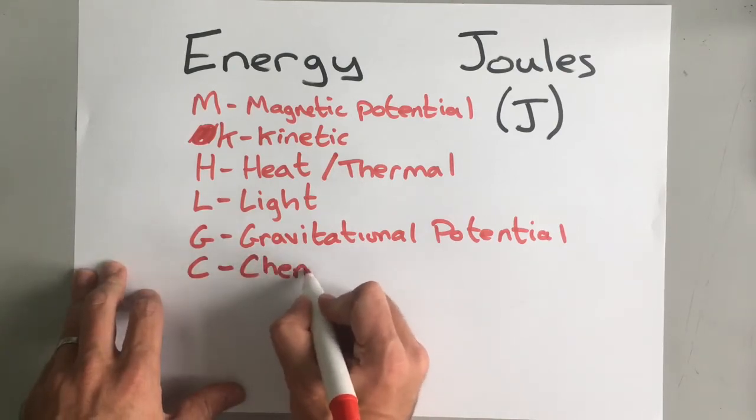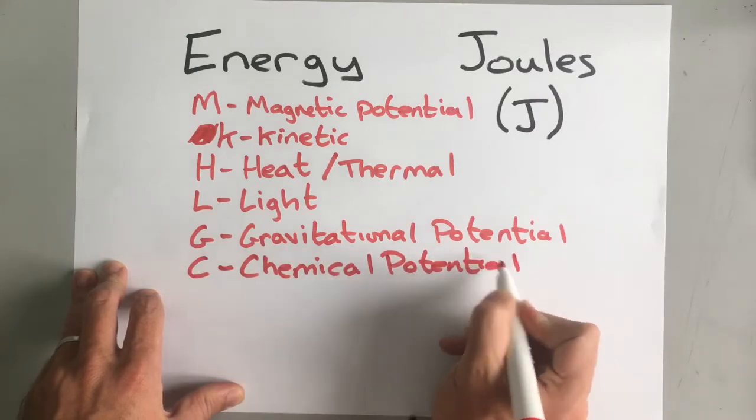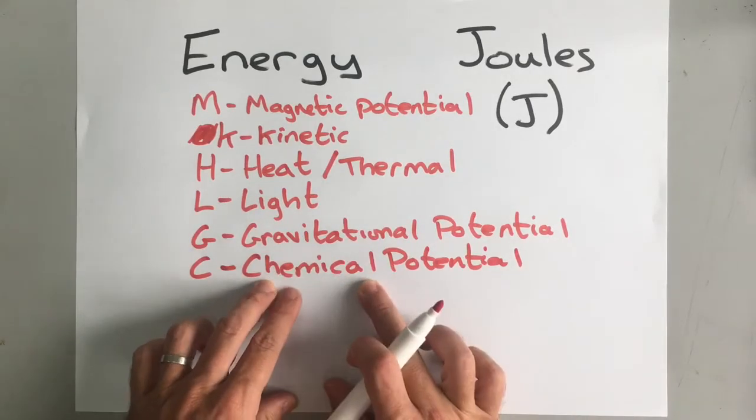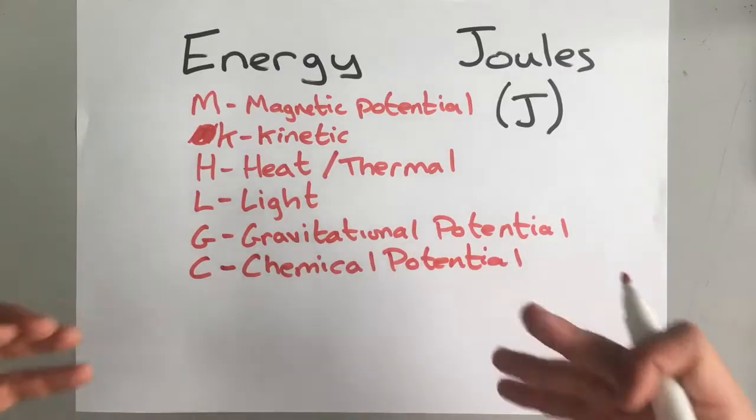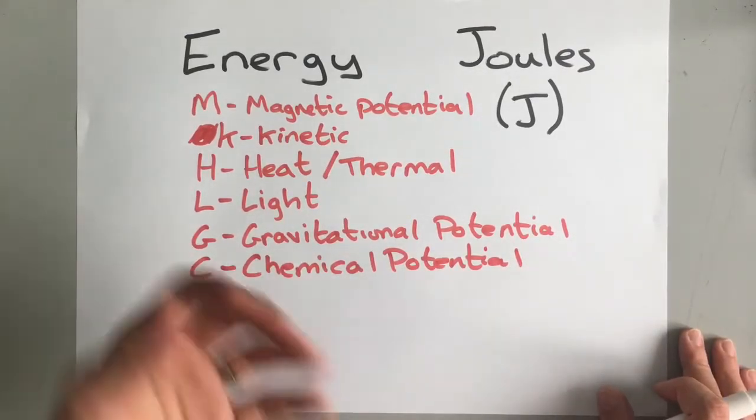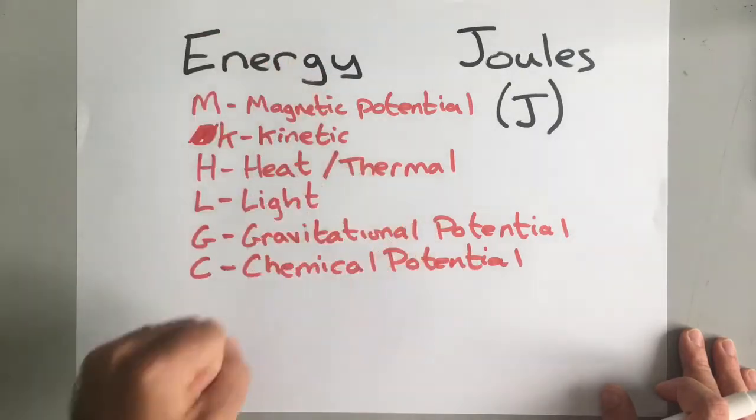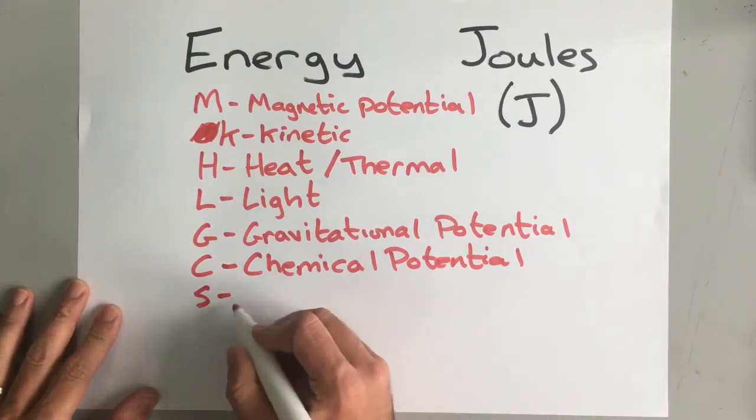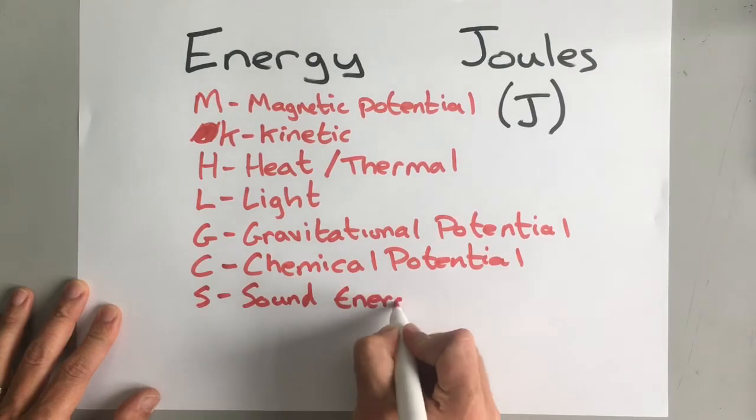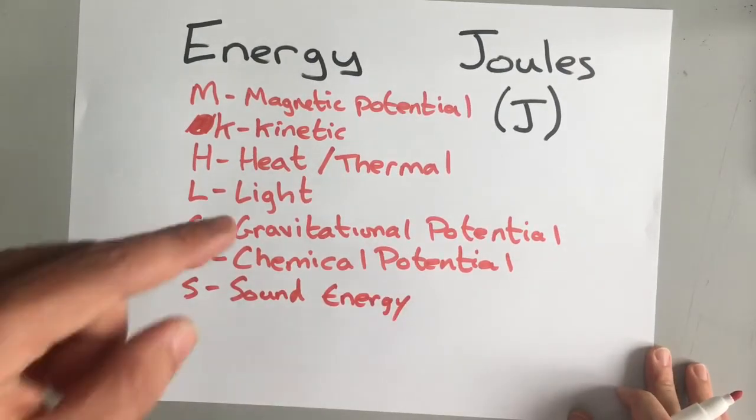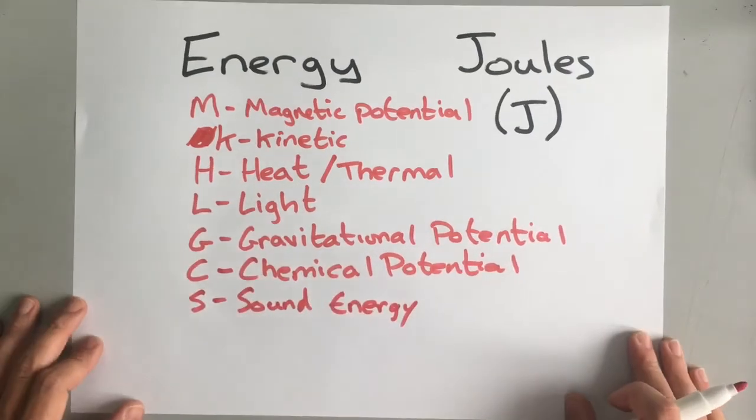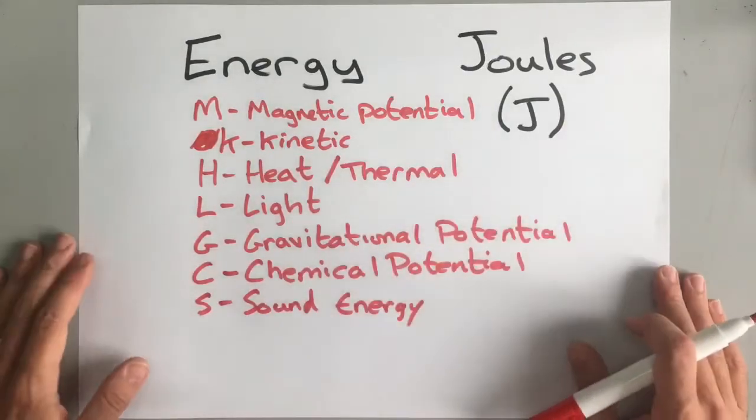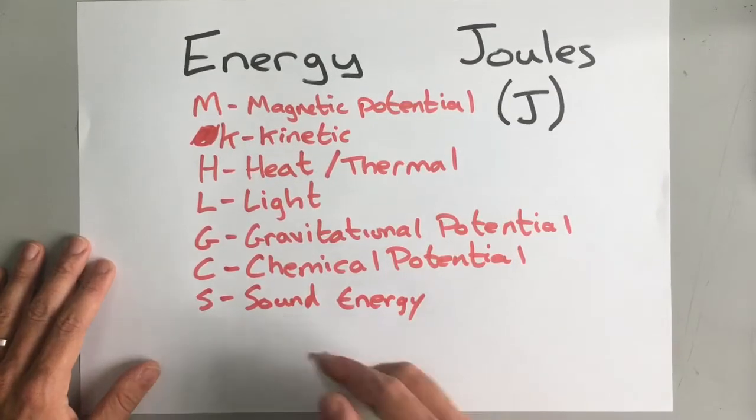Then we have chemical potential. Chemical potential is in batteries. It's also in your food that you eat. It's anything that is a chemical that can be used or burned to produce other types of energy. So for example, in your food you use your chemical energy to produce movement or sound like I'm doing at the moment—kinetic energy or sound energy, which is our next one. Or you use it in a battery to do something electrical, or you can use it as petrol in your car and that causes kinetic energy as well.